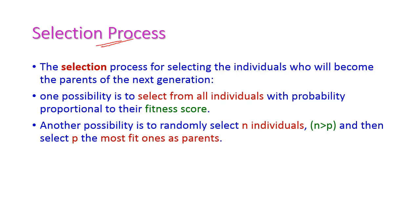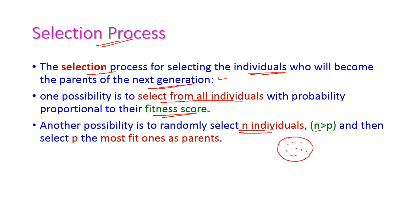The selection process involves selecting individuals who will become parents of the next generation. Two possibilities exist: first, select from all individuals with probability proportional to the fitness score; or second, randomly select n individuals where n is less than p, then select the p most fit ones as parents to create the new generation.